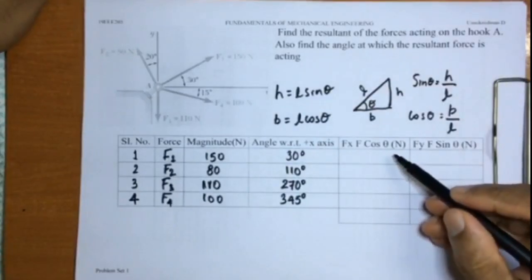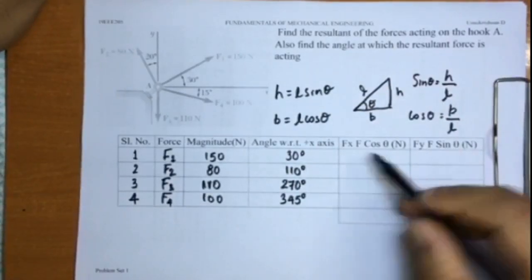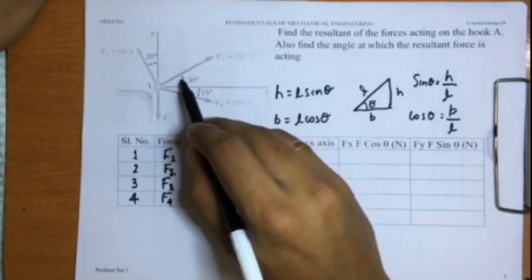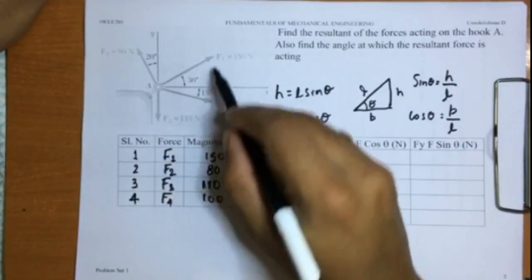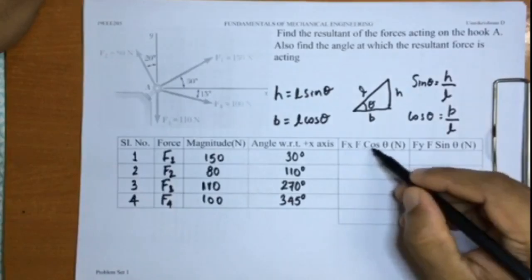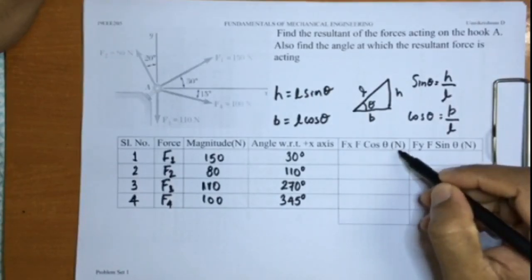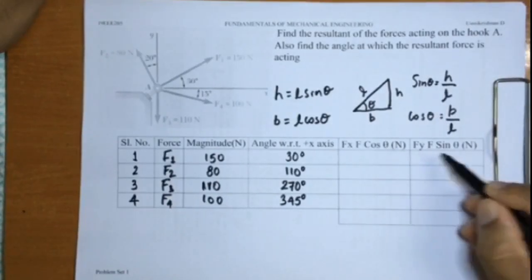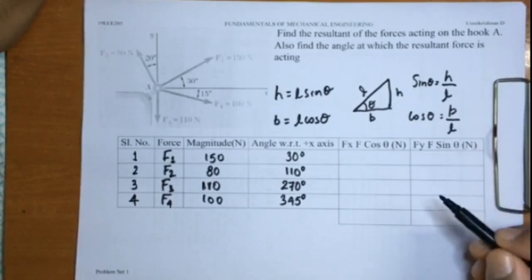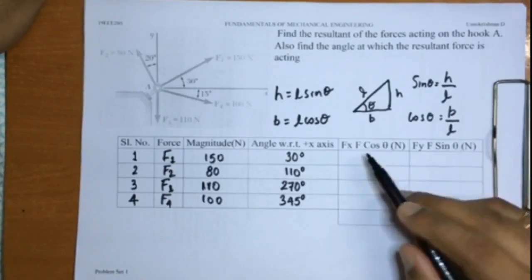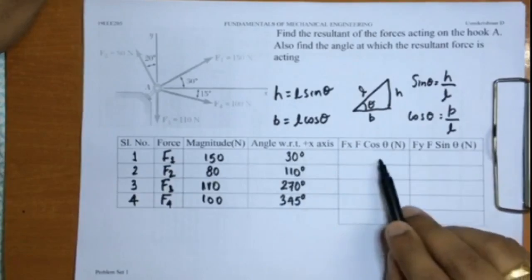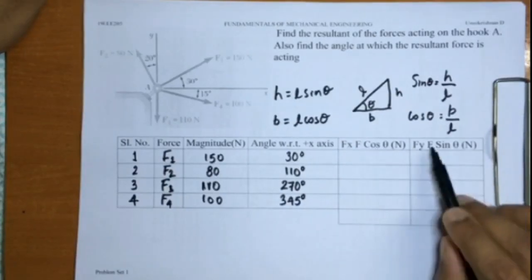The same thing applies here. I want to find the x component, so for each of these forces, if I go for the cos component of that force, it will be the horizontal component. Fx will be F cos theta, and similarly Fy will be F sin theta. So I will calculate what is F cos theta and F sin theta for all these four forces.